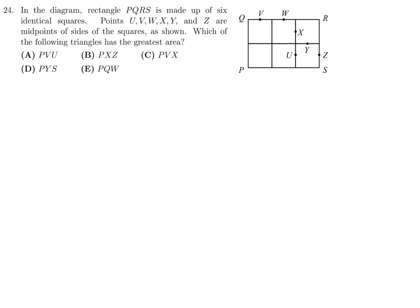In the diagram, rectangle PQRS is made up of six identical squares. Points U, V, W, X, Y, Z are midpoints of the sides of the square as shown. Which of the following triangles has the greatest area? Okay, so we have to just go through this and one by one calculate the areas. There's no other shortcut unfortunately. So PVU. It's going to be the area of the full square, which is 2 times 2. If I let each of those be 1 in length. And then I've got to subtract triangles. I've got to subtract this guy, I've got to subtract this guy, and I've got to subtract this triangle here. And that will give me the area of PVU.